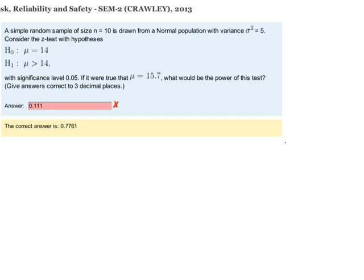The null hypothesis is that mu equals 14, and the alternate hypothesis is that mu is greater than 14, with a significance level of 0.05. Now it says if it were true that mu equals 15.7, what would be the power of this test?